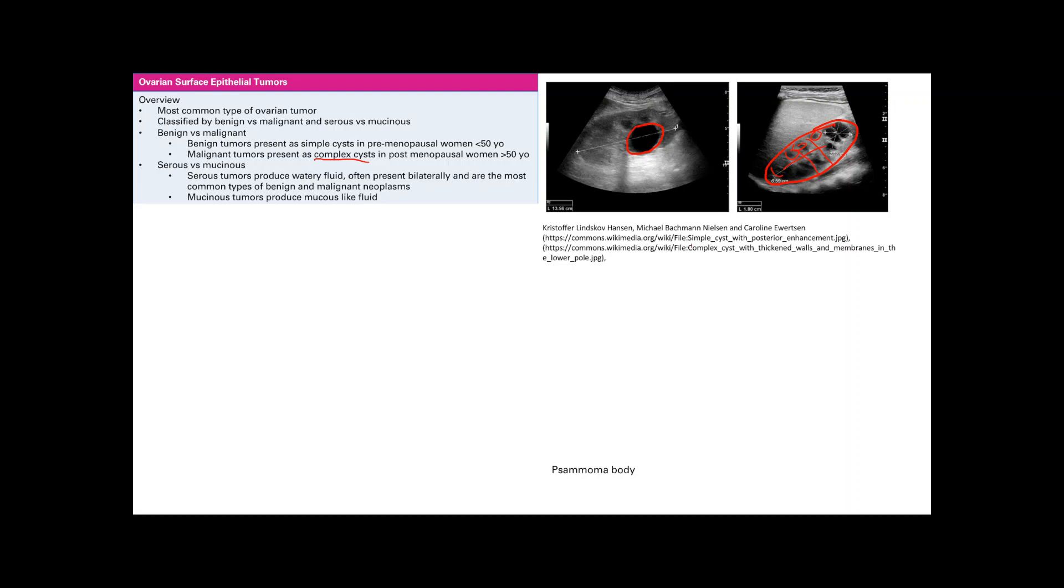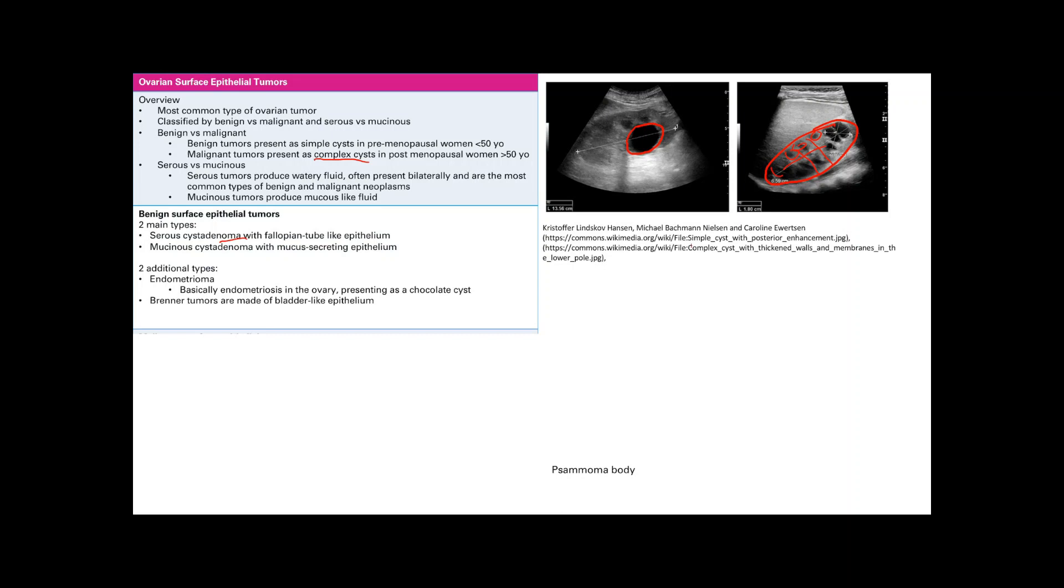Benign surface epithelial tumors: mainly there's serous cystadenoma, and you can tell from the 'oma' that it's a benign tumor. That has fallopian tube-like epithelium. Just remember that fallopian tubes also have serous cells, so that's why it makes sense. Serous cystadenomas have fallopian tube-like epithelium.